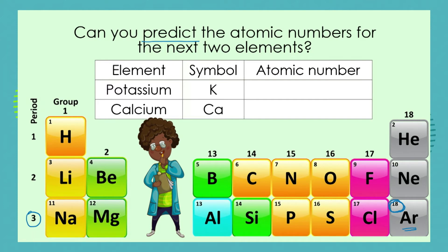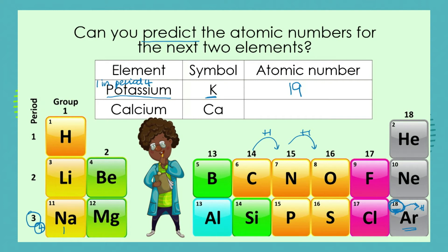If we go on to the next period, period four, underneath sodium, we're going to find the element potassium, which has the symbol K. Potassium is element number one in period four. What do you think its atomic number will be? Shout it out! Of course, the atomic number is going to be 18 plus one, because we've established the plus-one pattern. So potassium's atomic number is 19.